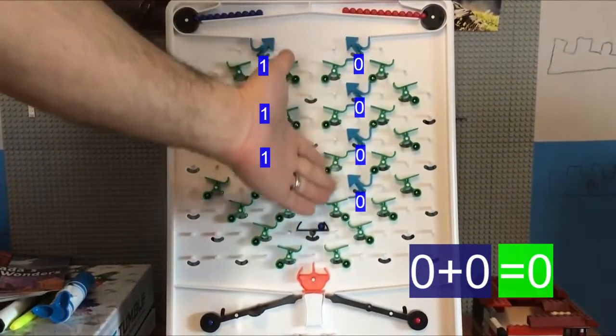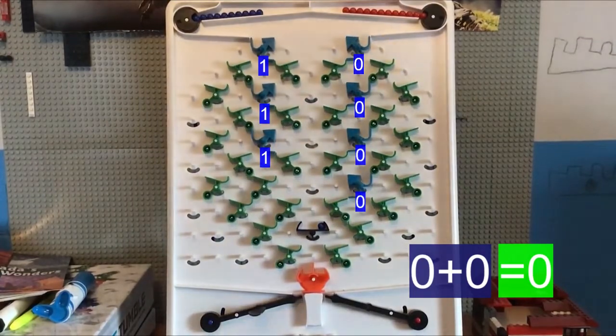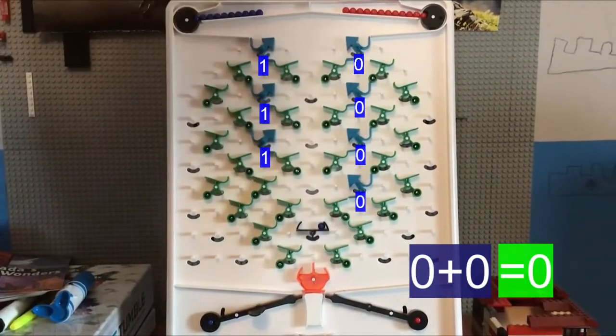And on the right-hand side, we can see that these arrows are all still set to zero. So that means the end result of our calculation is still zero.